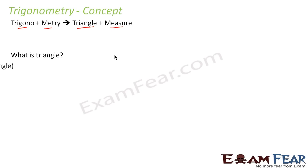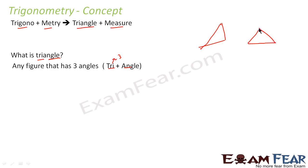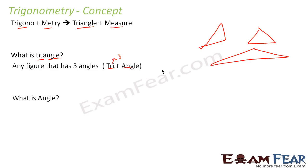Now, what is a triangle? If you break the word, it is 'tri' plus 'angle.' Tri means three, so anything which has three sides is called a triangle. For example, a shape with three sides is a triangle. Anything which has three sides is a triangle.